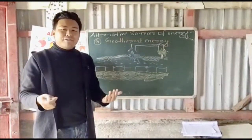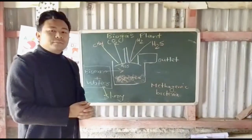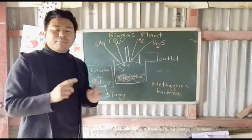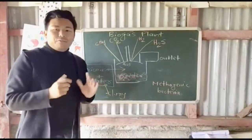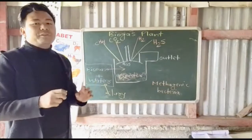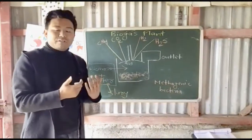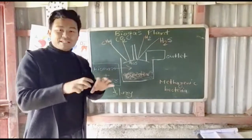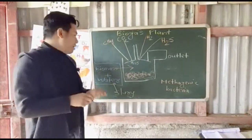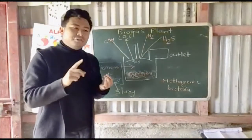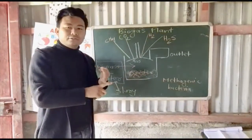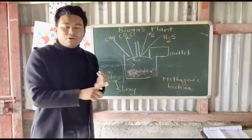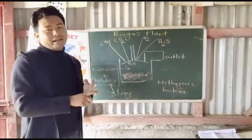Now we are going to look at another alternative source of energy: biomass and biogas. Biomass includes materials like cow dung and organic waste that can be mixed together. This is the basic raw material for producing biogas energy.